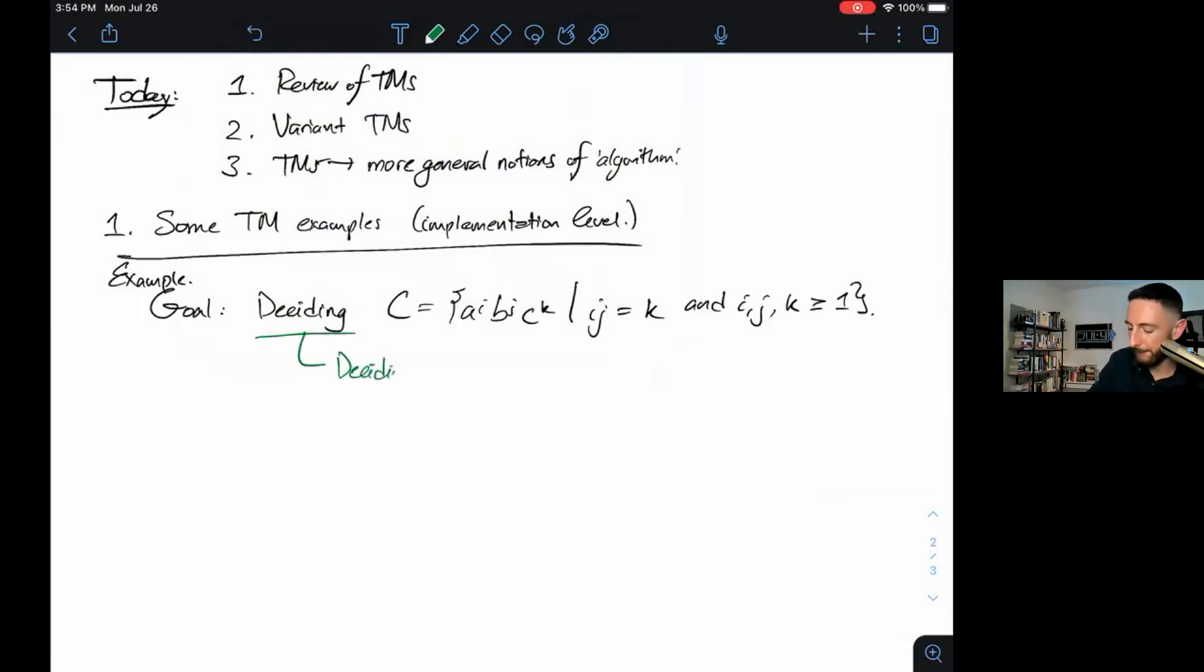Recall that deciding means yes if in a language and no otherwise. That's equivalent to accept and reject. Whereas recognizing means yes if in the language, may loop or reject otherwise. A recognizer has to recognize all and only the strings in the language, but if the string is not in the language, it may run for an arbitrarily long time or loop forever instead of directly rejecting.